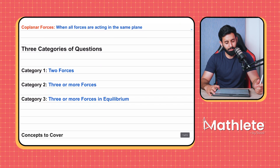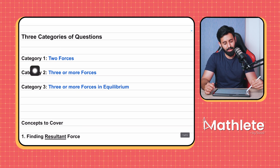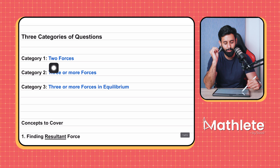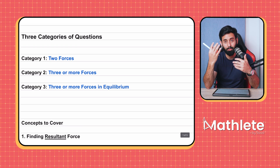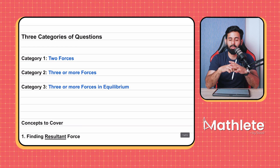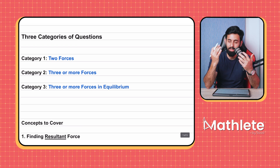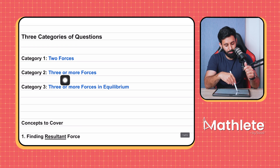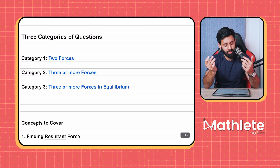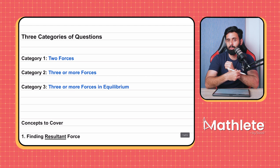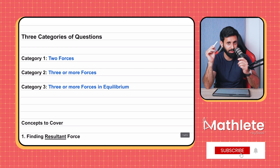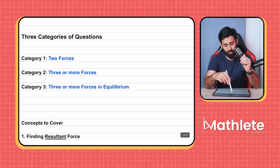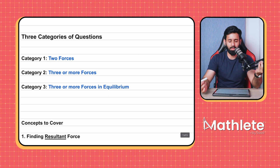I've gone through pretty much all the questions and I can safely say they fall into three categories. Category one: two forces acting away from a point — you'll be asked to find the resultant, which we can do by resolving forces or by using something called the parallelogram rule. Category two: three or more forces — you may be asked to find the resultant, or given the resultant with a missing force or angle to calculate. Category three: same as category two but you're told the forces are in equilibrium.